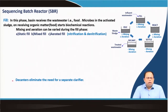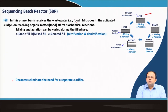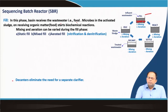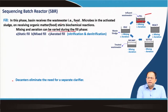In the fill stage of the sequencing batch reactor, the basin receives the wastewater — which is food for the microbes already present in the activated sludge in the chamber. Some amount of sludge is already there, and as soon as the wastewater comes in, the microbes treat the organic matter as food, start consuming it and growing, while the organic matter in the wastewater gradually reduces. Mixing and aeration can be varied during the fill phase: we can have an aerated fill, a mix fill, or a static fill.